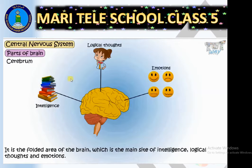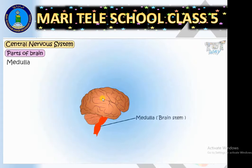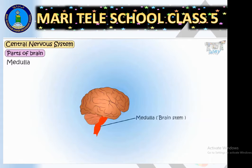The cerebrum is also the center for our memory — we recall things, remember things, interpret things, and create things because of it. It also controls our senses: we feel, taste, smell, see, and listen through it. We read and make decisions using this very important part of the brain.